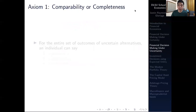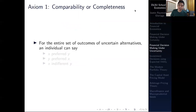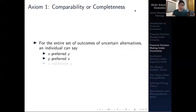The first axiom is comparability or completeness, almost the same as before. For the entire set of outcomes of uncertain alternatives, an individual can say that they prefer X over Y, they prefer Y over X, or they are indifferent between the two payoffs.